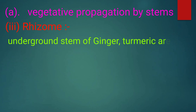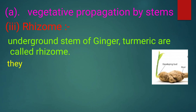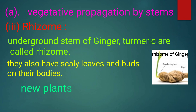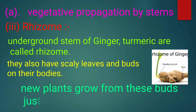Rhizome. The underground stems of ginger and turmeric are called rhizomes. They also have scaly leaves and buds on their bodies. New plants grow from these buds, just like the potato plant.